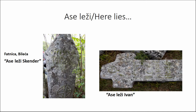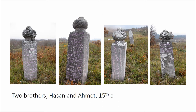Likewise, here are two tombstones next to each other in Herzegovina, in the village: 'Ašileji Skender' — here lies Skender, a Muslim — and 'Ašileji Iwan' — here lies Iwan. These rare examples of completely identical inscriptions are differentiated only by the name on the tombstone.